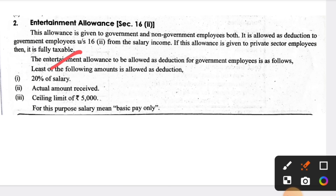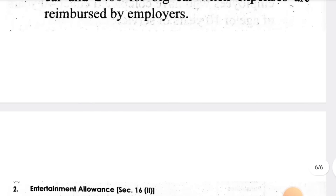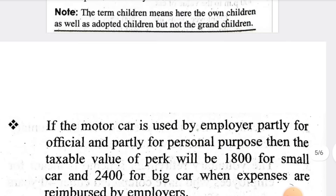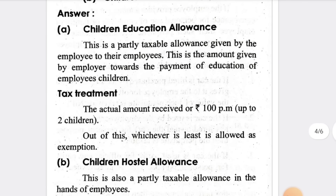To summarize: entertainment allowance deduction is the least of — 20% of salary, actual amount received, or ₹5,000 default. Remember all these key points and you will be able to easily understand the problematic questions from this unit, that is income from salary, by watching the subsequent videos.